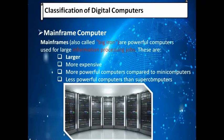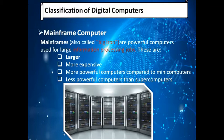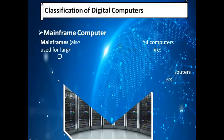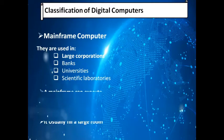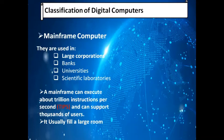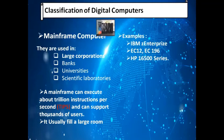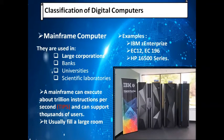The second important classification is the mainframe computer. Mainframes are also called 'big iron.' They are powerful computers used for large information processing jobs. These are larger, more expensive, and more powerful than minicomputers, but less powerful than supercomputers. They are used in large corporations, banks, universities, and scientific laboratories. A mainframe computer can execute trillions of instructions per second.